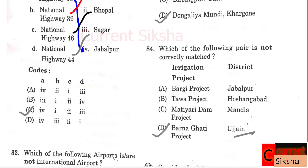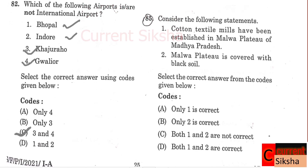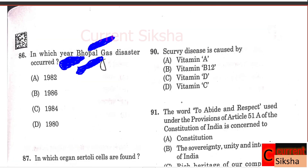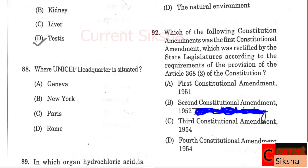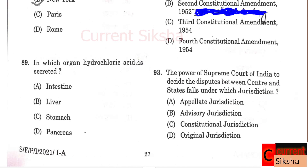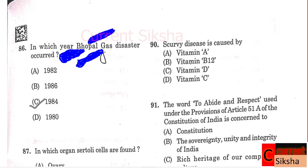Question 85: Consider the following statements. Correct option D - Both 1 and 2 are correct. Question 86: In which year did the Bhopal gas disaster occur? Correct option C - 1984. Question 87: In which organ are Sertoli cells found? Correct option D - Testes. Question 88: Where is UNICEF headquarters located? Correct option B - New York. Question 89: In which organ is hydrochloric acid secreted? Correct option C - Stomach. Question 90: Scurvy disease is caused by? Correct option D - Vitamin C deficiency. Vitamin A causes night blindness; Vitamin D deficiency causes Rickets.